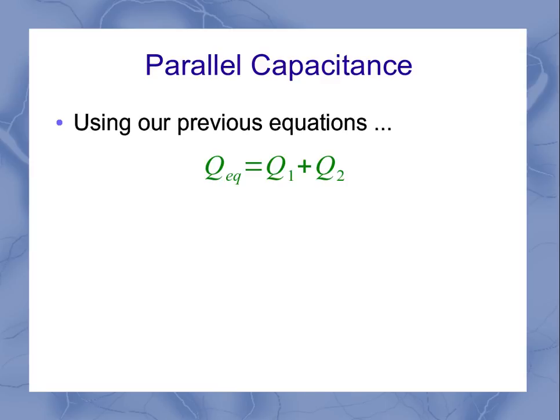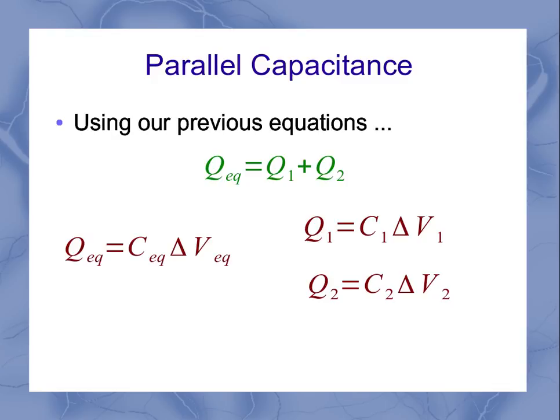From those initial equations, the charge on capacitor 1 and capacitor 2 can be written as the capacitance times the voltage, Q equals CV. The same is true of the equivalent.